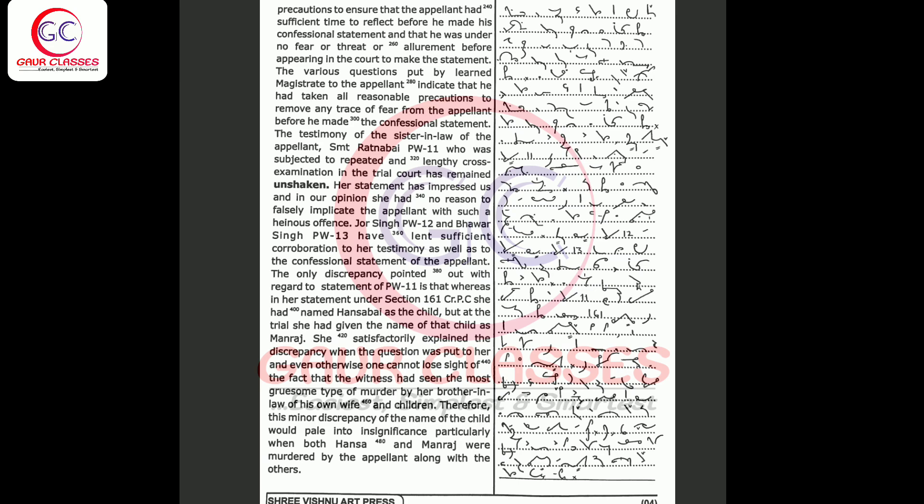Is that whereas in her statement under Section 161 CRPC she had named Hansa Bai as the child but at the trial she had given the name of that child as Manaraj. She satisfactorily explained the discrepancy.